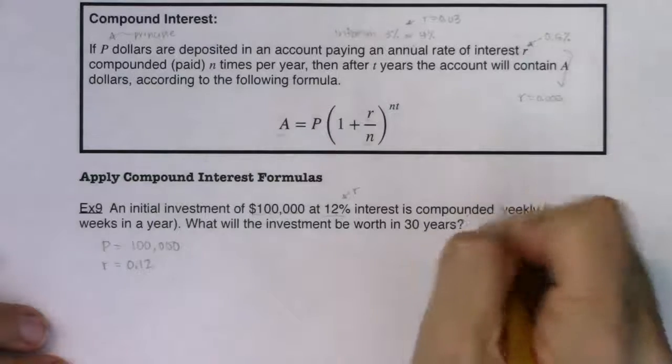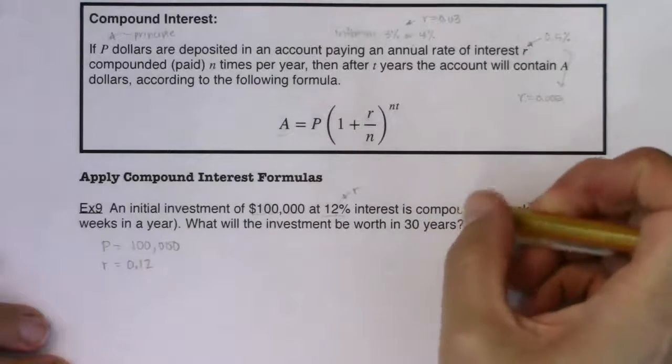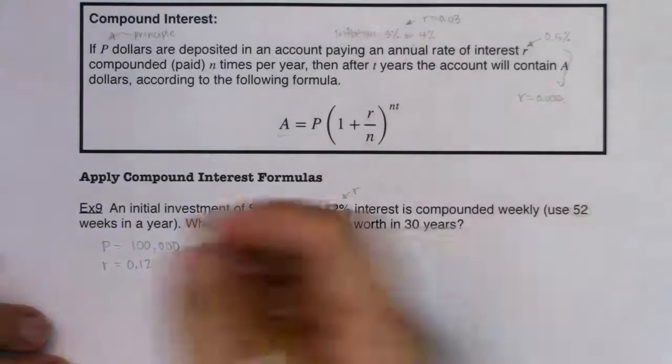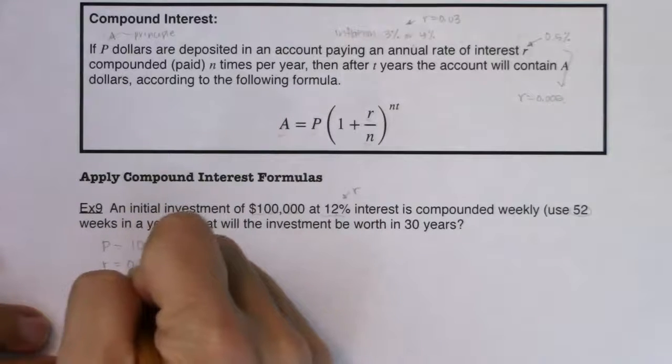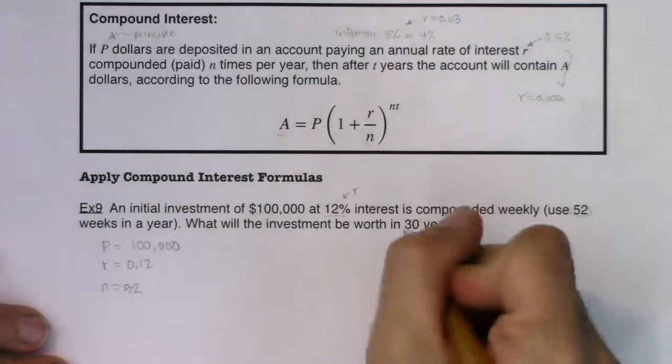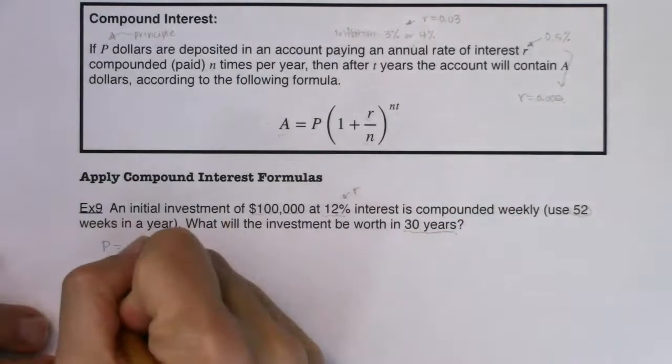Now here I'm being told I'm compounding interest weekly. All right. When you compound interest weekly you're going to get interest 52 times in a year. So N is going to be equal to 52. All right. And then we see this last one here of 30 years. Well that's a time value.